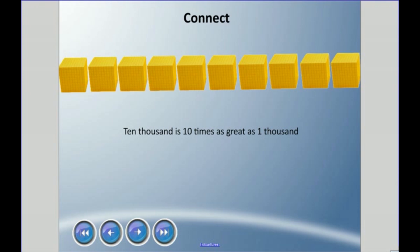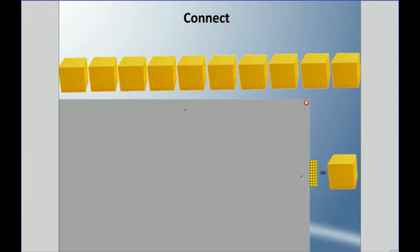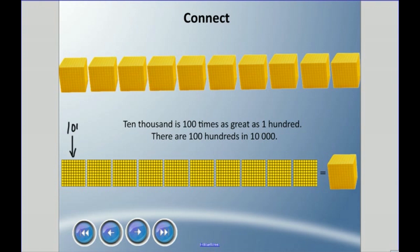We're going to talk about 10,000. 10,000 is 10 times as great as 1,000. Each one of these cubes is made up of 1,000 little cubes, and if we have 10 of those, that would be 10,000. However, if we're talking about hundreds, 10,000 is 100 times as great as 100, and there are 100 hundreds in 10,000. Each one of these is 100, and when I have 10 of these, it equals one of these thousands, and we need 10 of those to make 10,000.